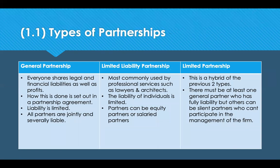There are three broad types of partnerships. A general partnership is where everyone shares legal and financial liabilities as well as profits, as set out in a partnership agreement. A limited liability partnership (LLP) is most commonly used in professions like lawyers and architects, where the liability of individuals is limited; partners can be equity partners who own a share and receive dividends, or salaried partners who receive a salary and bonus. A limited partnership is a hybrid — there must be at least one general partner with full liability, while others can be silent partners who don't participate in management.